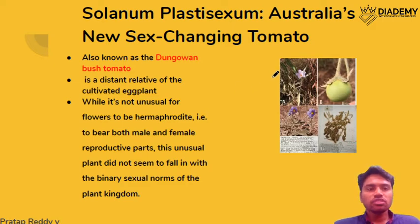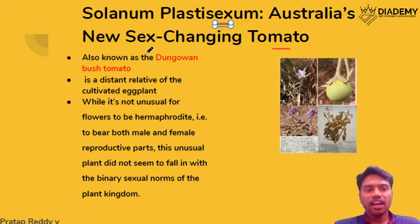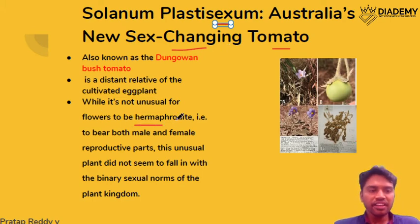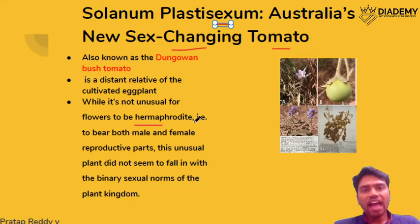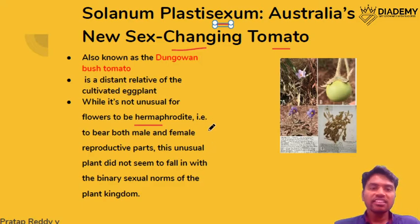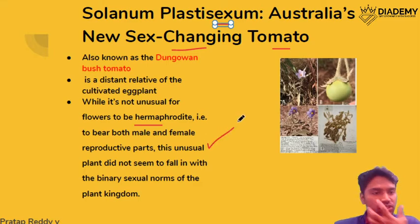Solennum plastisexum got its name because this particular tomato species has the tendency to change its sex. Generally, flowers are hermaphroditic — meaning they have both male and female reproductive parts — but this particular species changes its sex nature. That is why it is in news, and it is found in Australia.